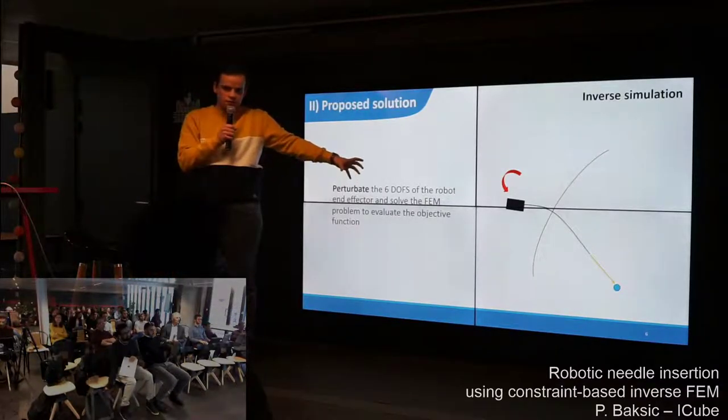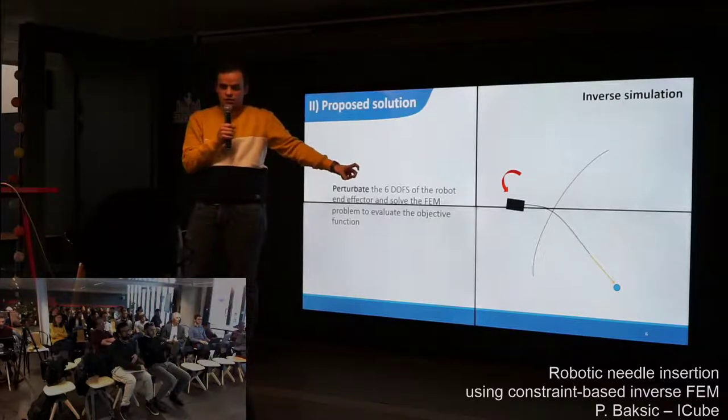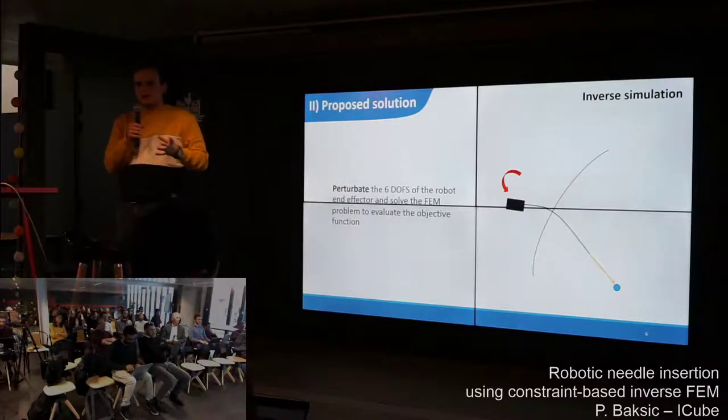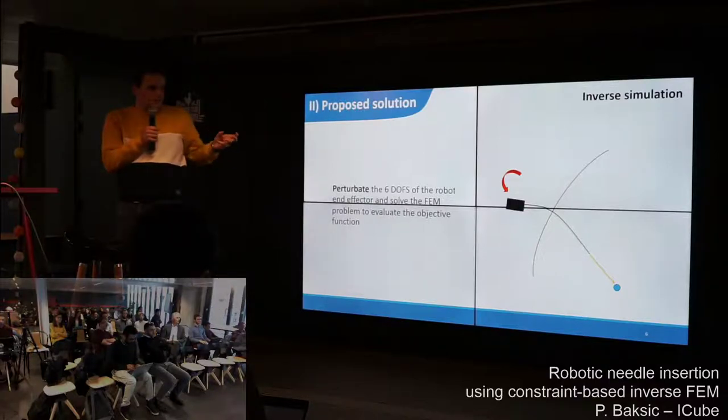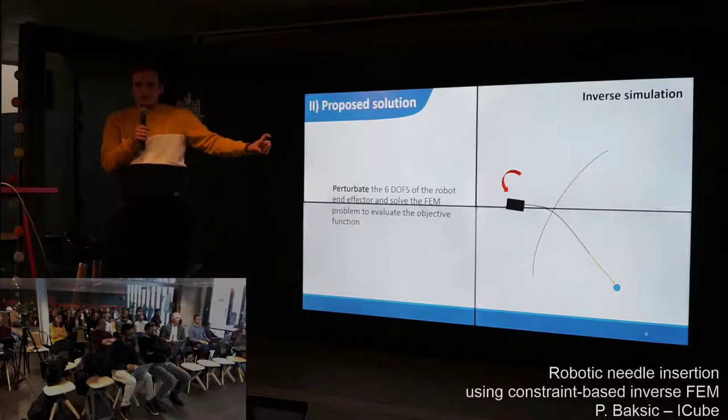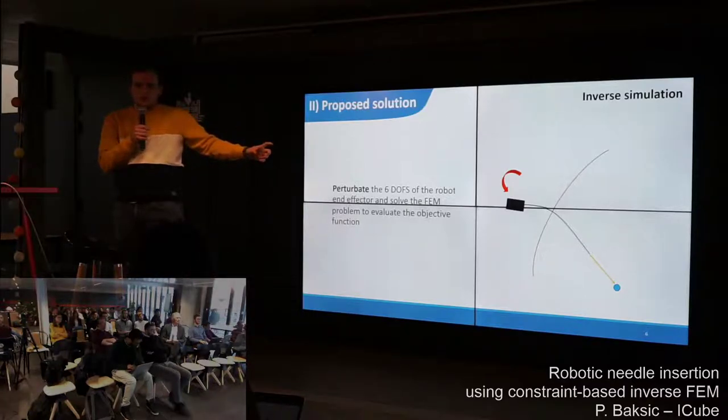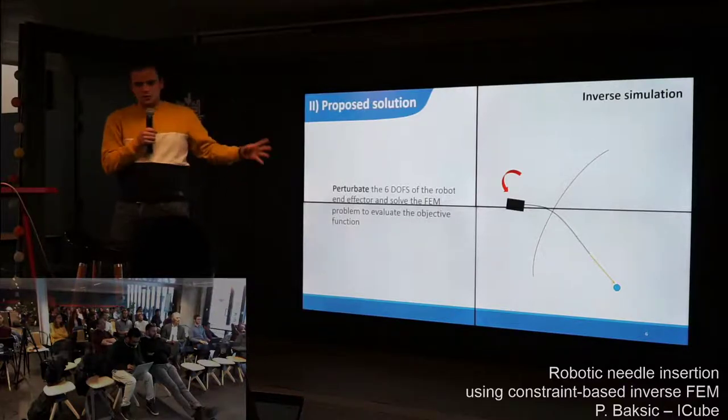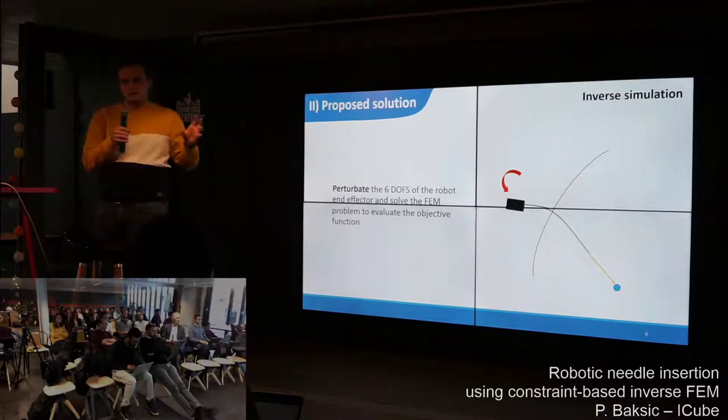For a quick example, as you can see here in yellow, there is the objective function of tip positioning. This can be expressed as a bilateral constraint, because it's as if we want the tip to be on the target. So it's a violation of a constraint.